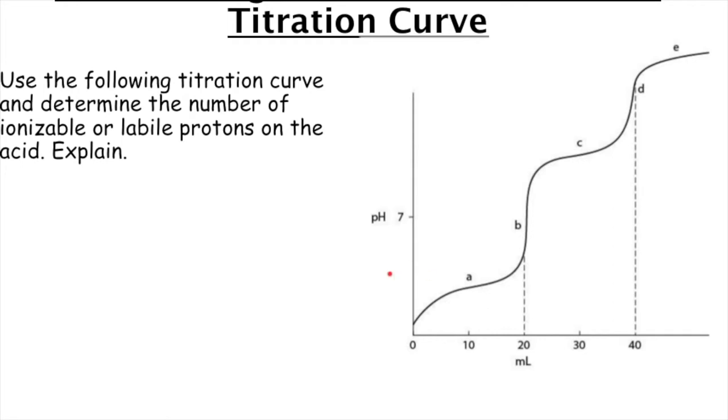So in this example, we are definitely given a polyprotic acid because the pH starts very low. And then notice that it shoots up suddenly at point B. It kind of levels back out, and then it shoots back up again at point D. Anytime you have a sudden jump in pH like that, it shoots straight up. That is an equivalence point.